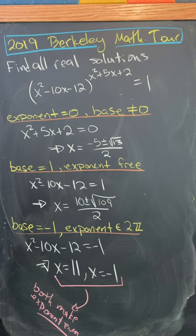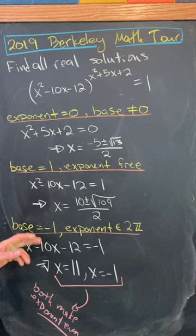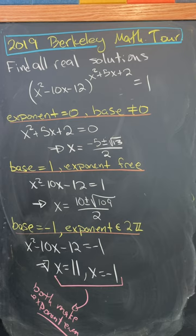Finally you could have the base equal negative 1 and the exponent to be an even integer. So here you would get x equals 11 or x equals negative 1. But it's easy to see that both of these make the exponent even, which means both of these are solutions.